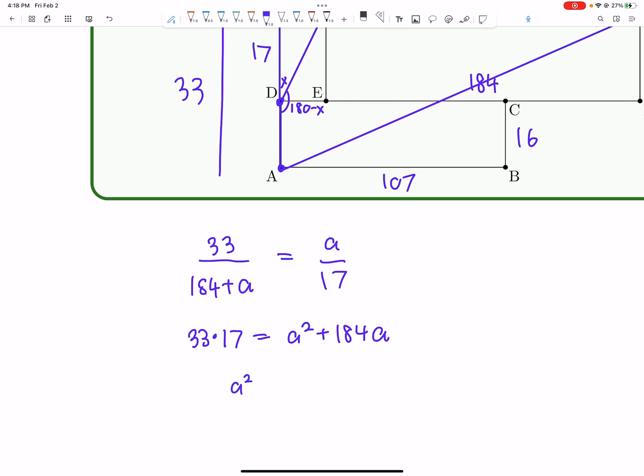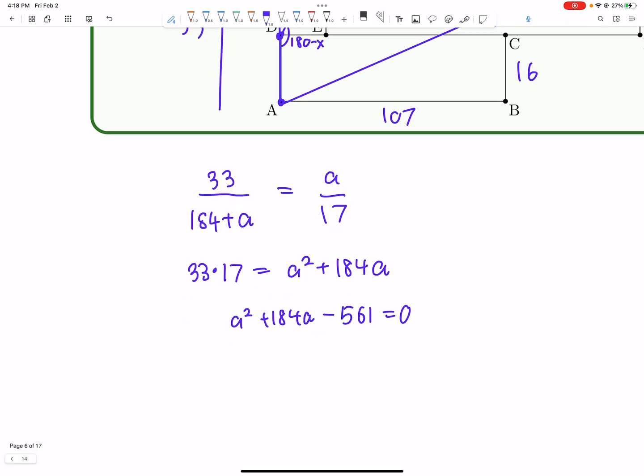So then we get A squared plus 184A minus 561 equals 0. And now take a look, let's see if we can factor this quadratic. And it's pretty nice, because we get A plus 187 times A minus 3 equals 0.